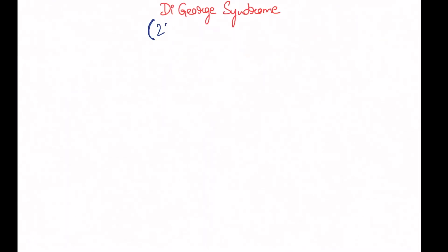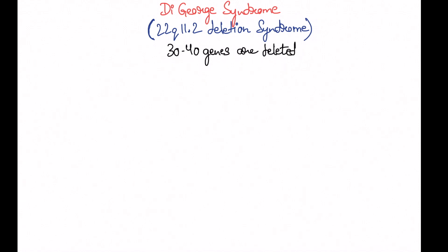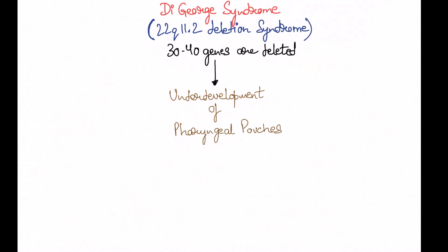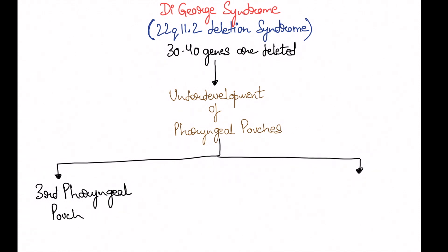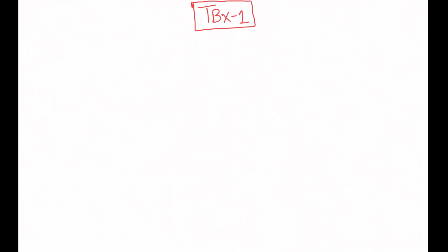DiGeorge syndrome is a syndrome where we have a deletion of a fragment of chromosome number 22. It occurs in the long arm of the chromosome, which is 'q', and the area is 11.2. Approximately 30 to 40 genes are deleted here, and that leads to underdevelopment of pharyngeal pouches — specifically the third and fourth pharyngeal pouches. The TBX gene, present in chromosome 22, is responsible for development of pharyngeal pouches.